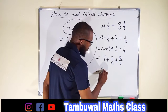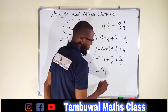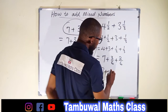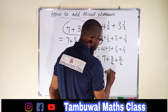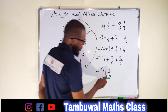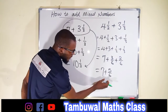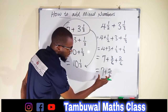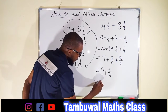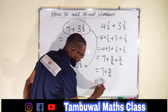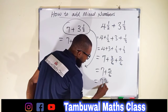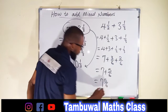This is equal to 7 plus... adding 3 over 6 and 2 over 6 together gives 5 over 6. And since we have a whole number and a fraction, adding them together gives the mixed number 7 and 5 over 6.